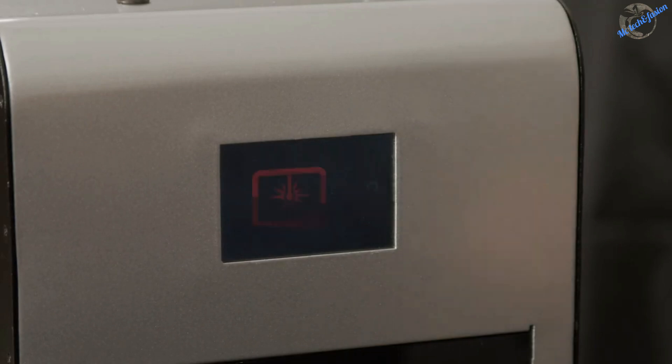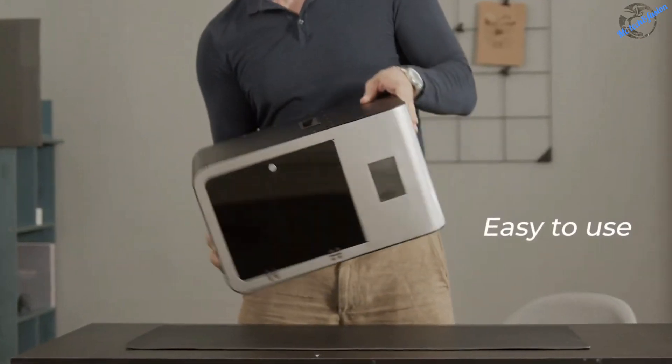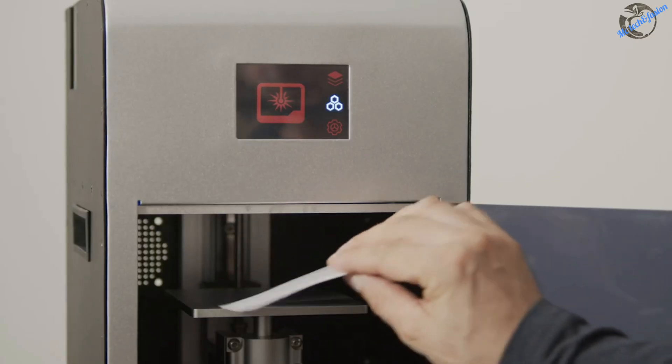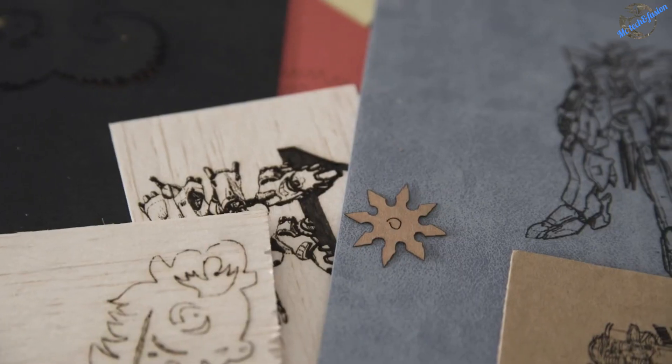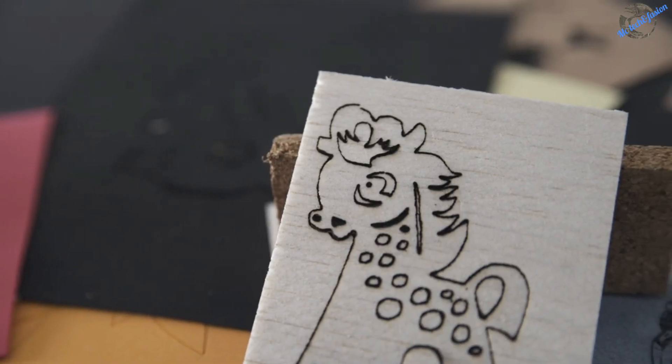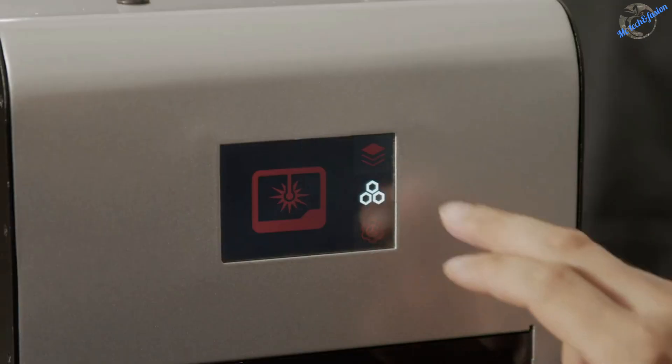And it's so easy to set up. Just flip it to change from printing to cutting or engraving mode. You can cut or engrave paper, wood, leather, fabric, cardboard, non-transparent acrylic, and many other materials.